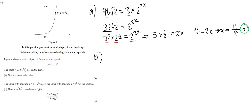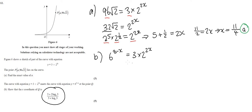Now we're onto part b. The curve y equals three times two to the power of two x meets another curve with equation y equals six to the power of three minus x at point Q. We need to show the x-coordinate of Q. Whenever two curves meet there's an intersection, so we set the equations equal: six to the power of three minus x equals three times two to the power of two x. We can't just divide through because the six is a base, not a coefficient, so let's bring the power down and take a log of six.